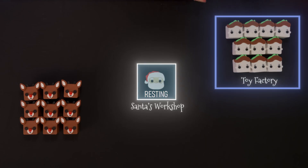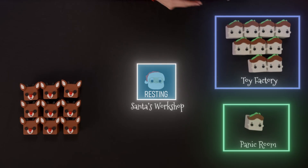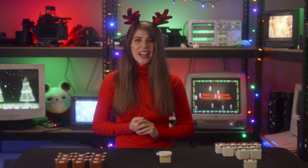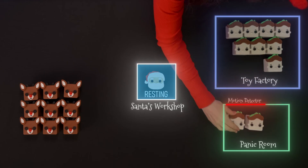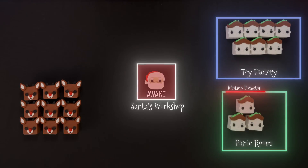The second event that can wake up Santa involves the elves. The elves are currently building toys, and there are 10 of them. If three of them have a problem making a toy, they can wake up Santa for help. Anytime an elf has a problem making a toy, they enter into the panic room. Imagine there is a motion detector that activates when an elf walks through the door. Once the motion detector counts three elves in the panic room, the alarm goes off to wake up Santa. The panic room can hold a maximum of three elves.